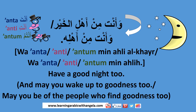To address a male you say وأنت من أهل الخير or وأنت من أهله. To address a female you say وأنتِ من أهل الخير or وأنتِ من أهله. To address a group you say وأنتم من أهل الخير or وأنتم من أهله. Note that plural in Arabic is always three or more people; for two people there is a separate dual form.